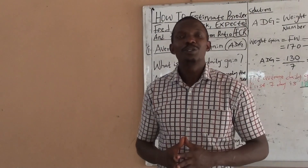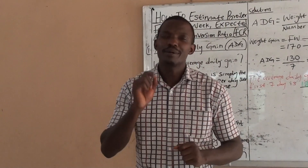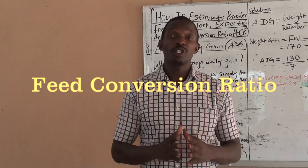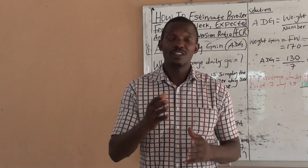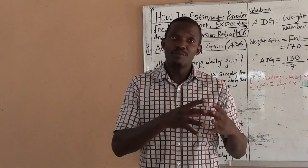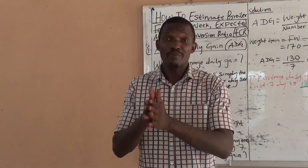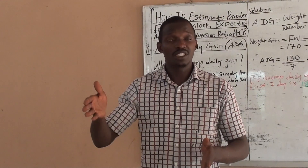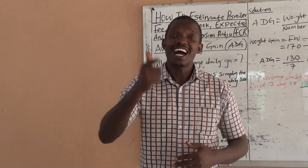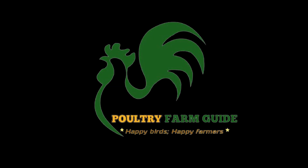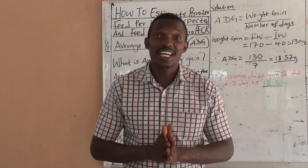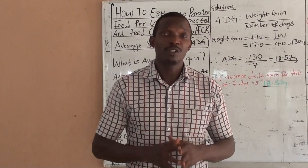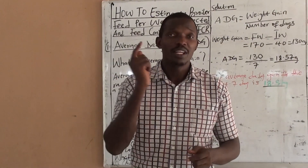Welcome to the Country Farm Guide. On today's video, we are going to learn how to calculate some important parameters in broiler production, such as feed conversion ratio, expected weight of broiler chicken, and the amount of feed broiler chickens will consume — that is, how much feed in kilograms a certain number of broilers will consume over a period of 6, 7, or 8 weeks. Stay tuned. Let's get down to business.